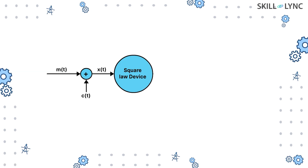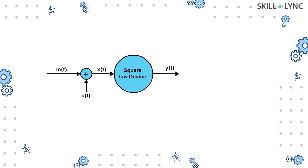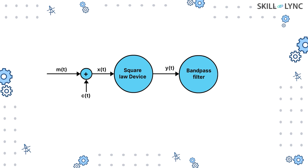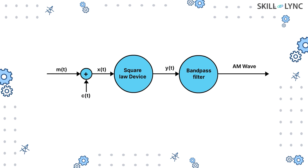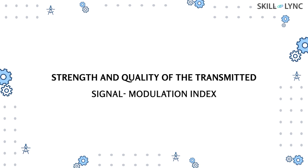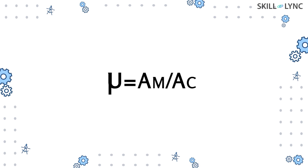The message signal is added to the carrier signal and passed through a device which amplifies the input voltage or current to the order of x raised to the power of 2 — this device is called the square law device. The signal is then passed into a band pass filter, which allows only signals centered at the carrier frequency to pass. The output from the band pass filter is power amplified and then transmitted via the antenna. The strength and quality of the transmitted signal is given by the modulation index, which is the ratio of the amplitude of the message signal to the carrier signal.